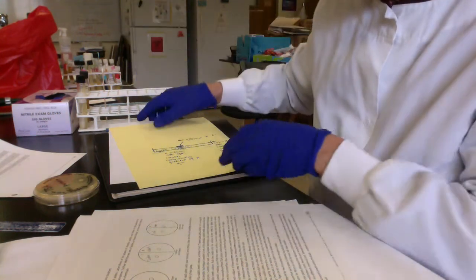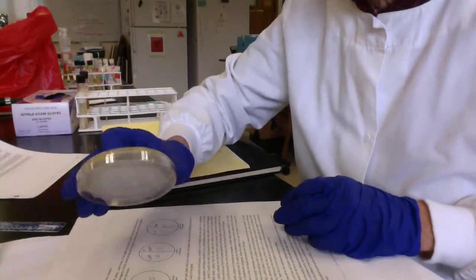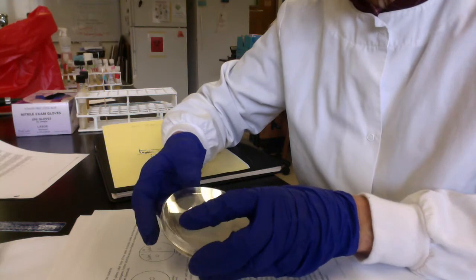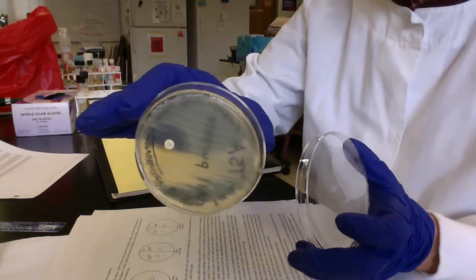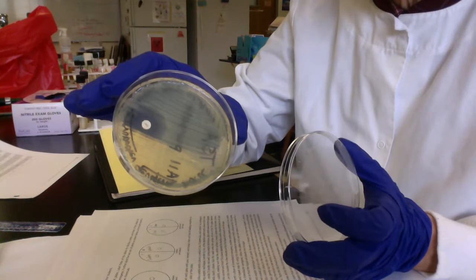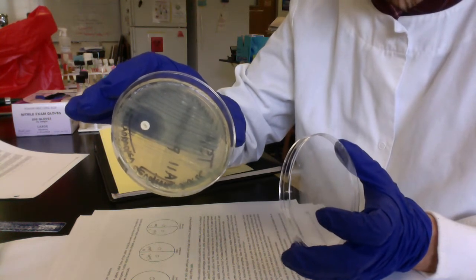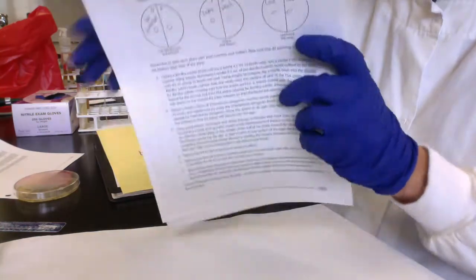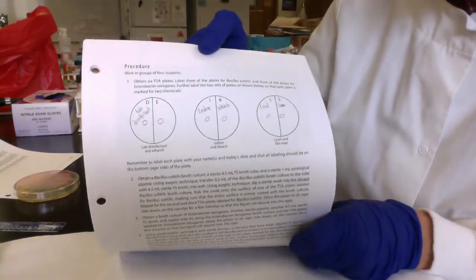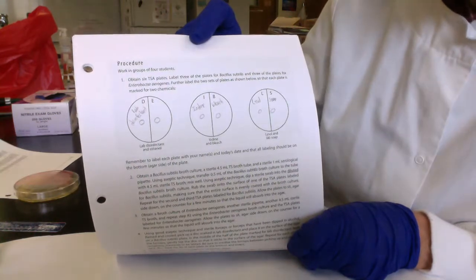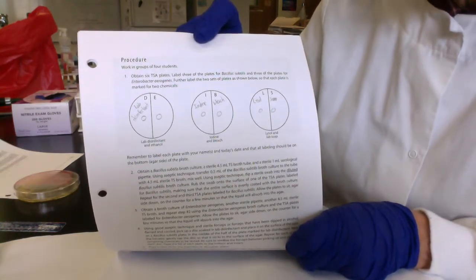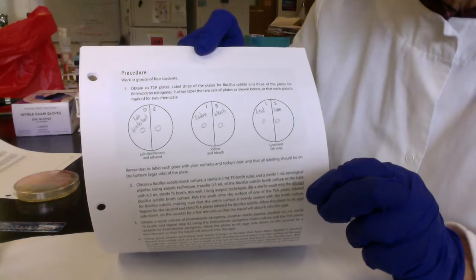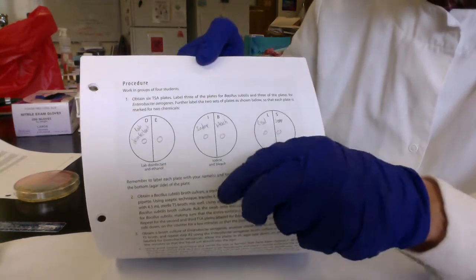In disk diffusion, the idea is we're going to swab our plate to get confluent growth, and then we're going to place on the surface of the swab plate filter disks that have been soaked in different chemicals. In the first experiment described on page 161 of your lab manual, we're going to compare different antiseptics and disinfectants using the disk diffusion study. For each bacteria tested, we would swab three plates, divide the plates in half, and place filter disks soaked in six different chemicals, one disk on each half of the plate.